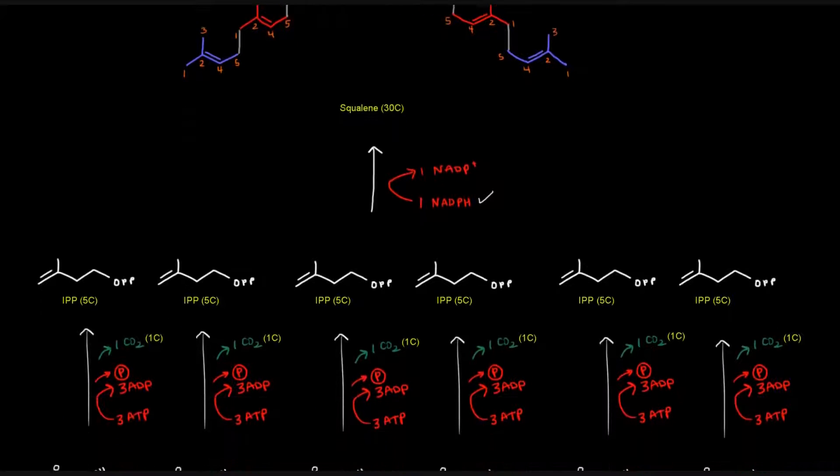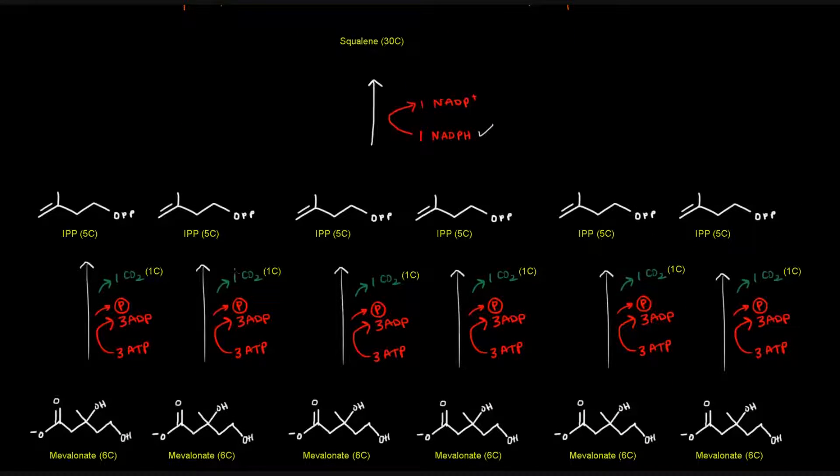Where did we get these IPPs from? We got them from mevalonate, each of them. In each of those reactions we lost one carbon dioxide and we used up three ATPs. So if we total that up, three times six, that's 18 ATP molecules used.